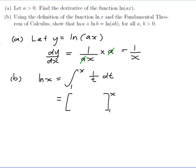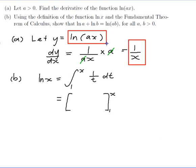Now obviously ln(x) is an antiderivative of 1 on t, but I can't use that — that'll just give me ln(x) is equal to ln(x). But wait, I've just figured out an antiderivative of 1 on x from part a. There's 1 on x, and its antiderivative is ln(Ax), because when I differentiate ln(Ax) I get 1 on x. So what I could use is ln(At), because I'm integrating with respect to t.